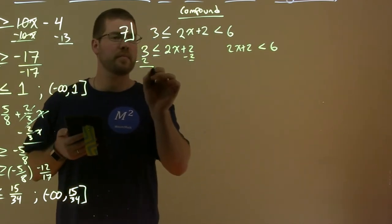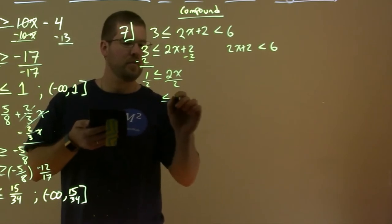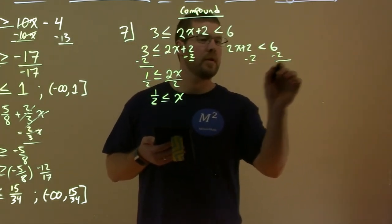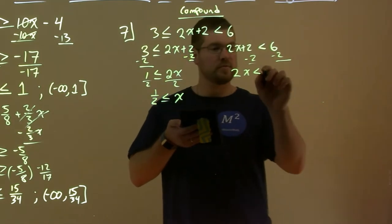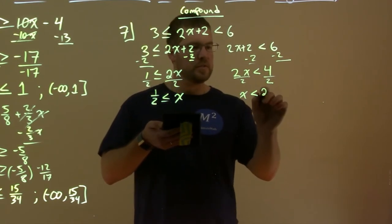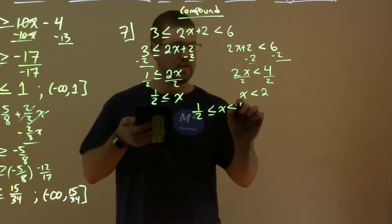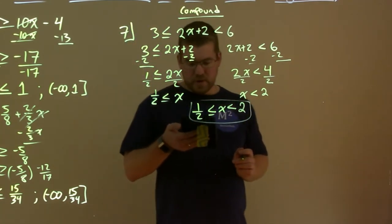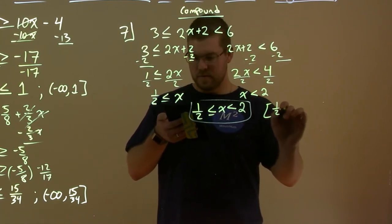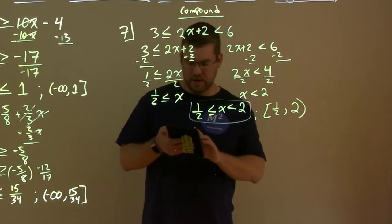Subtract the 2 to both sides. 3 minus 2 is 1. Less than or equal to 2x. Divide by 2 to both sides. And we have less than or equal to x here. And we have 1 half. Same thing here. Subtract 2 to both sides. 2x by itself is less than 6 minus 2 which is 4. Divide by 2 to both sides. And x by itself now is less than 4 divided by 2 which is 2. And we can bring it all together to have one inequality to be 1 half less than or equal to x which is less than 2 right here. If you want to see this in interval notation. We can see this as 1 half through to 2. But we cannot equal 2. So, we put a parenthesis there. So, these two are meaning the same thing.